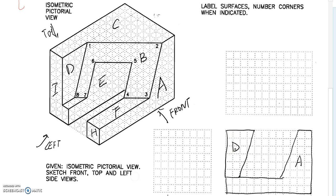To draw surface E, we actually need to rely on the numbers on oblique surface B. Let's take a look at the numbers. Number 1 is the corner of surface D. Number 2 is the corner of surface A. Number 3 is the other corner of surface A. Number 4 is 6 blocks from the left side. Here is the 4. Number 8 is 2 blocks from the left side. Number 7 is 3 blocks from the left side.